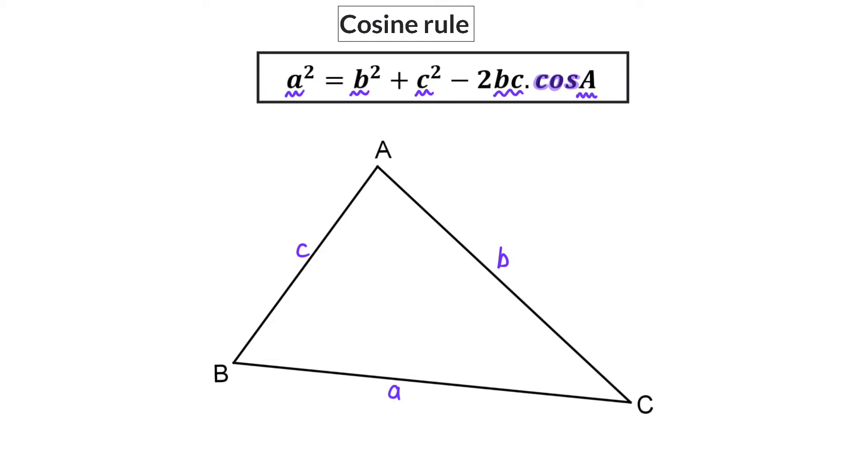So, just like in the sine rule, here we have four variables in the cos rule, meaning you need information about three of them so that you can solve the fourth one. So, if we want to solve side a, or determine side a's length, this means we will need side b, side c, as well as angle A in between these two sides.